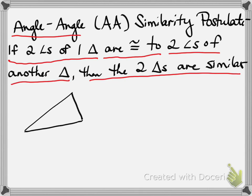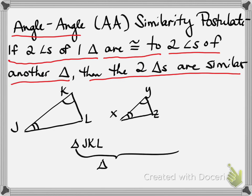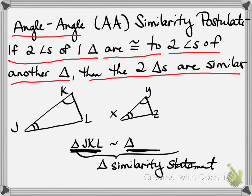So angle-angle similarity: if we draw some triangles here, triangle JKL and triangle XYZ. I'm trying to make them look the same shape, just one smaller than the other. If you know angle J and angle X are congruent, and you know angle K and angle Y are congruent, that's enough to prove that triangle JKL is similar to triangle XYZ. Remember, this first one you can write any way you want, and this one you have to make sure it matches: J and X match, K and Y match, L and Z match. These two are similar by angle-angle similarity.